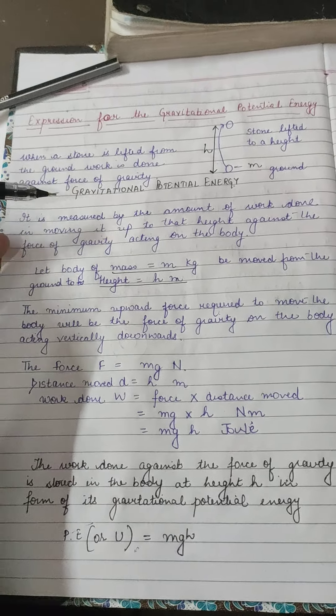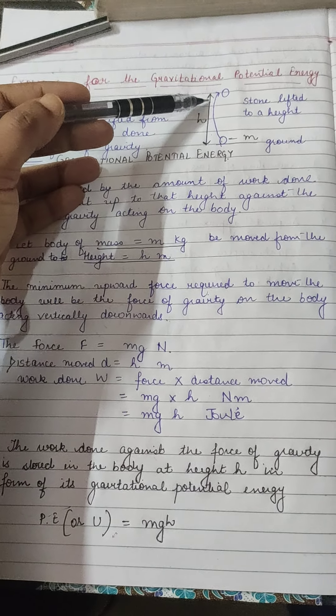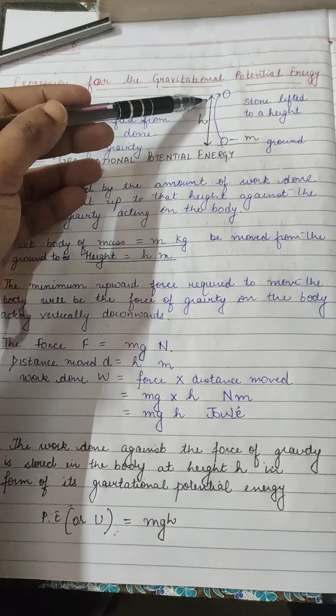Now we are going to measure the amount of work done for bringing this body from this point to this point — to lift this body up for some height h. Suppose this object is having mass m, and you are lifting it to height h. We are doing work against the force of gravity of the earth. The gravity force acting on the body is measured by the amount of work done in moving it up to the height against the force of gravity acting on the body. Let this stone be having mass m kg, where kg is the SI unit of mass.